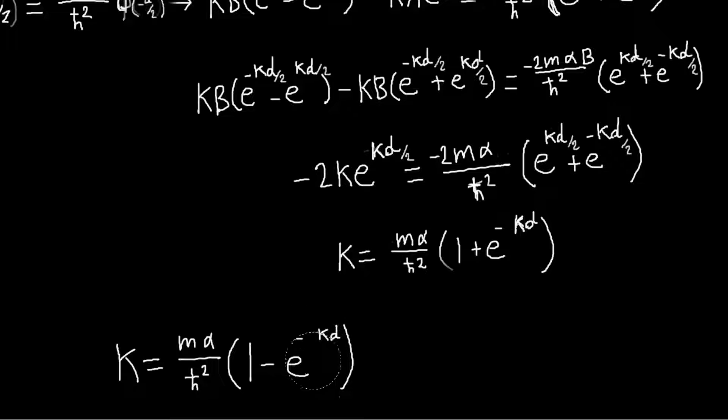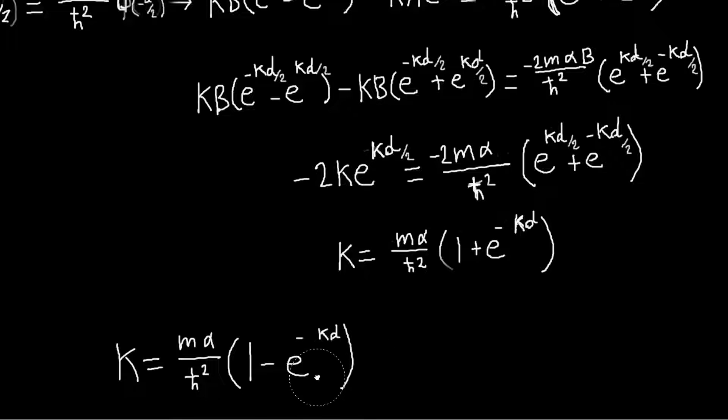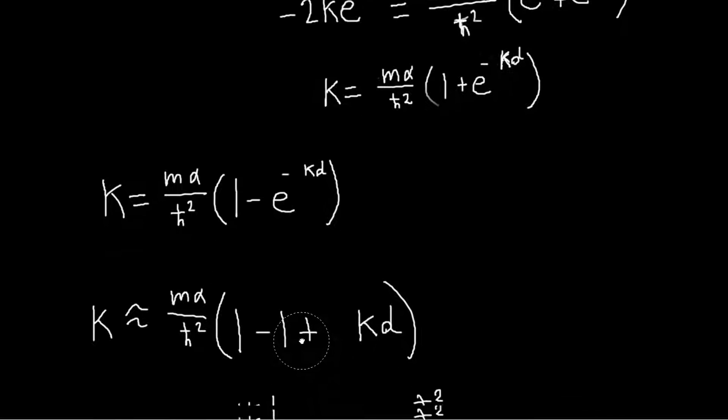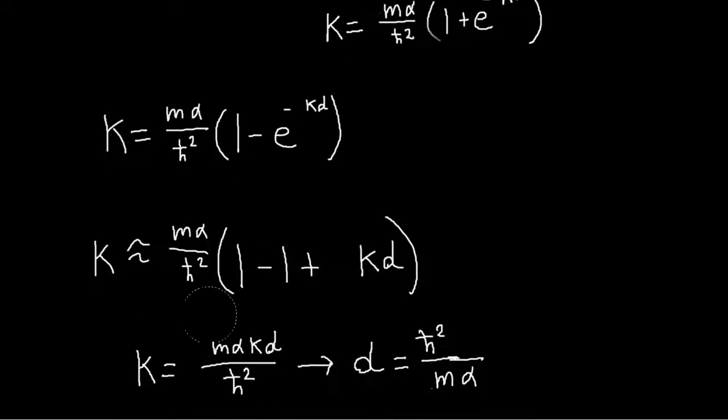So I just want to Taylor expand this exponential to order k, which is just 1 minus kD. So my equation will become this, and then these ones will cancel. And I will just have this equation.